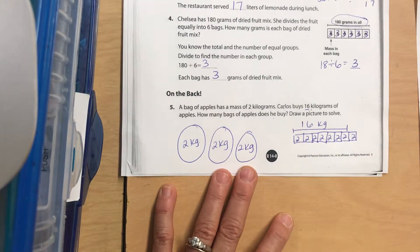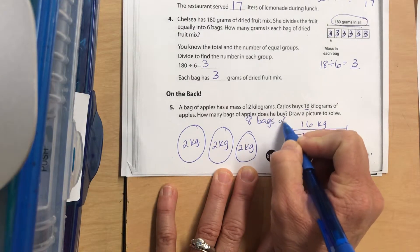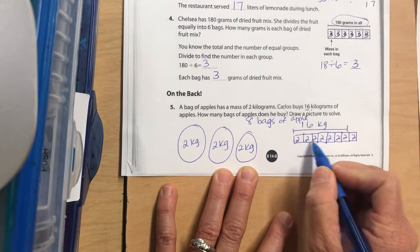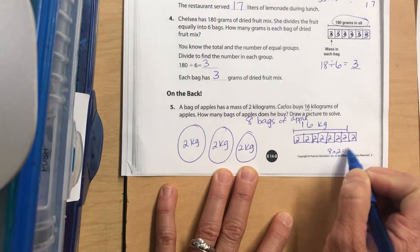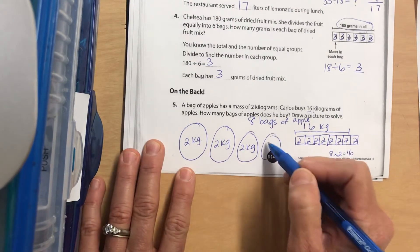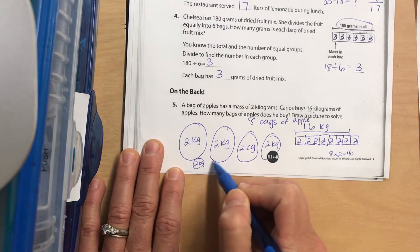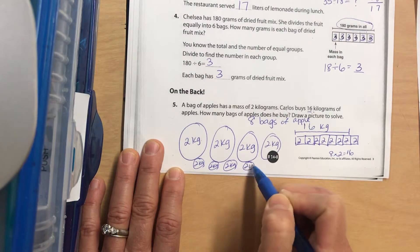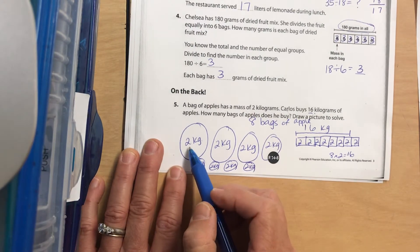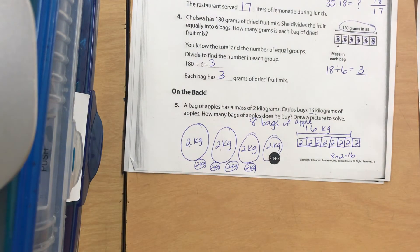Okay, how many bags? Should be eight bags. One, two, three, four, five, six, seven, eight. Eight times two equals 16. You also could have just kept drawing bags over here. They shouldn't be this much smaller, but that's okay, I'm running out of room. So if each bag is two kilograms: two, four, six, eight, ten, twelve, fourteen, sixteen. So that's eight bags. Great job, see you tomorrow!